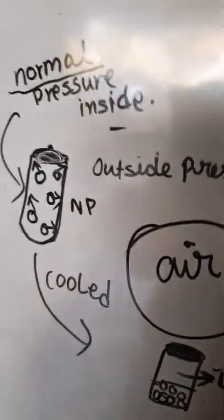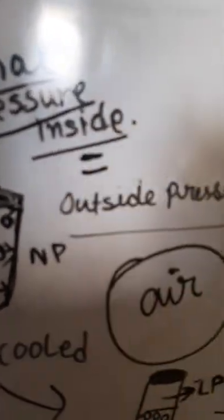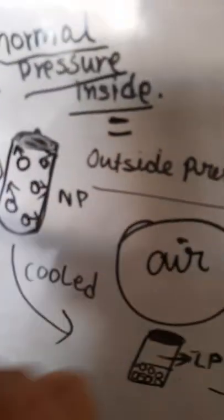Now when the bottle was outside, it was kept in a normal way. The shape was not changed. It was normal as it is now. So the pressure inside the bottle was normal and the outside pressure was also normal, and they both balanced each other, and so the shape did not change.